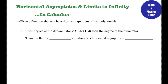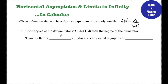First, given a function that can be written as a quotient of two polynomials — meaning f(x) = p(x)/q(x), where p(x) and q(x) are both polynomials — if the degree of the denominator is greater than the degree of the numerator, say there's an x³ on the bottom and p(x) is just an x on top, then the limit of that function would be zero and there would be a horizontal asymptote at y = 0.